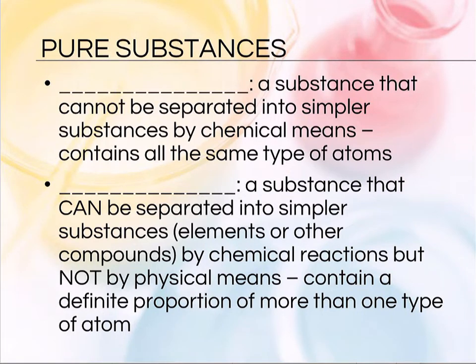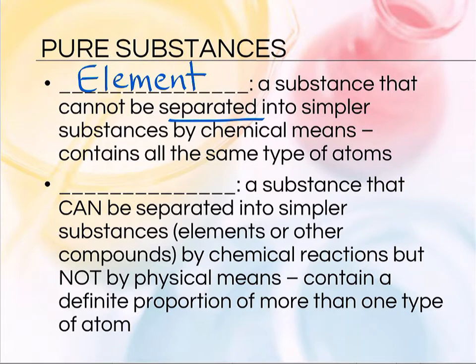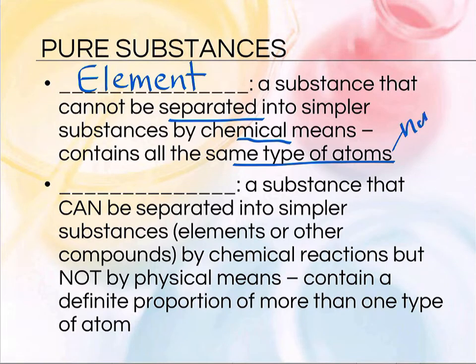Let's focus on pure substances for now. An element is a type of pure substance made entirely of one type of atom. It can't be separated into anything smaller — there are no components to it that would still retain the properties of that element. If you were to split the atoms into different pieces, that's no longer a chemical separation; that's a nuclear separation. So elements cannot be broken down by a chemical reaction.